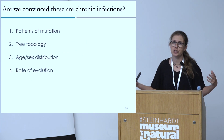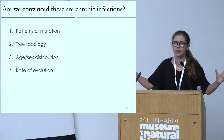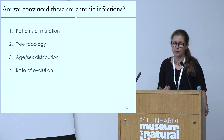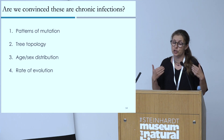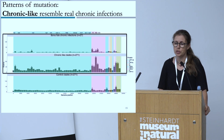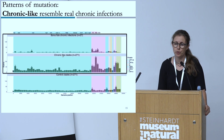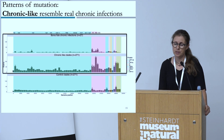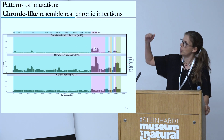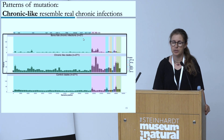How did we become convinced that our set is enriched for chronic infections? We have four lines of evidence. First, the pattern of mutation: in these chronic-like clades, we again see enrichment of mutations in the spike protein — the same type of pattern shown before — while in the control set, we don't see it. The real 27 cases shown before look the same, with small bars only due to the low sample size of n=27.